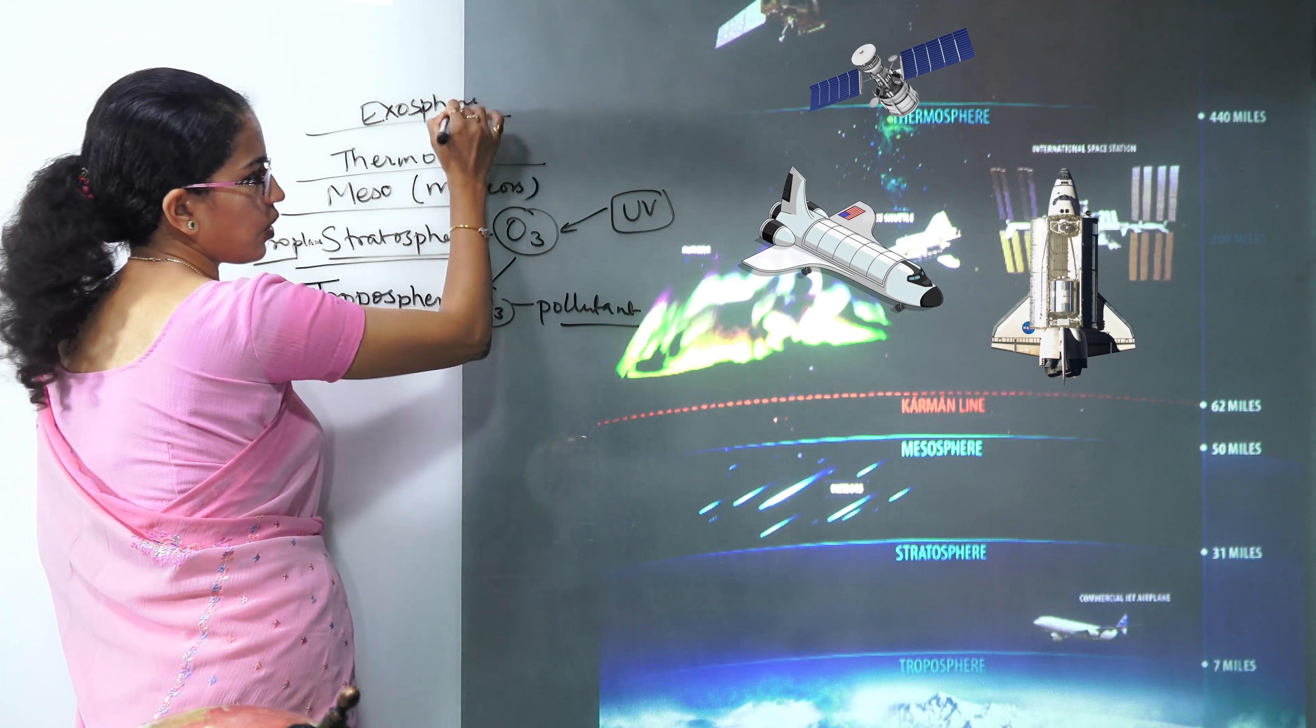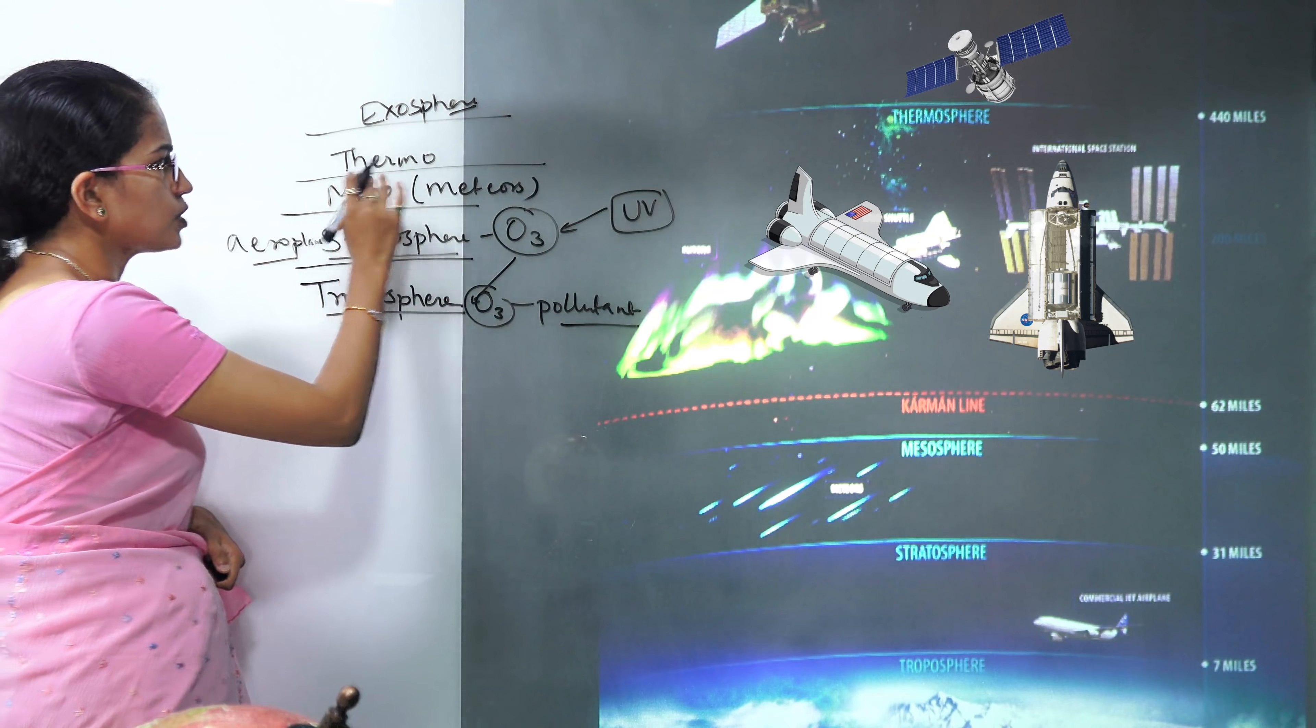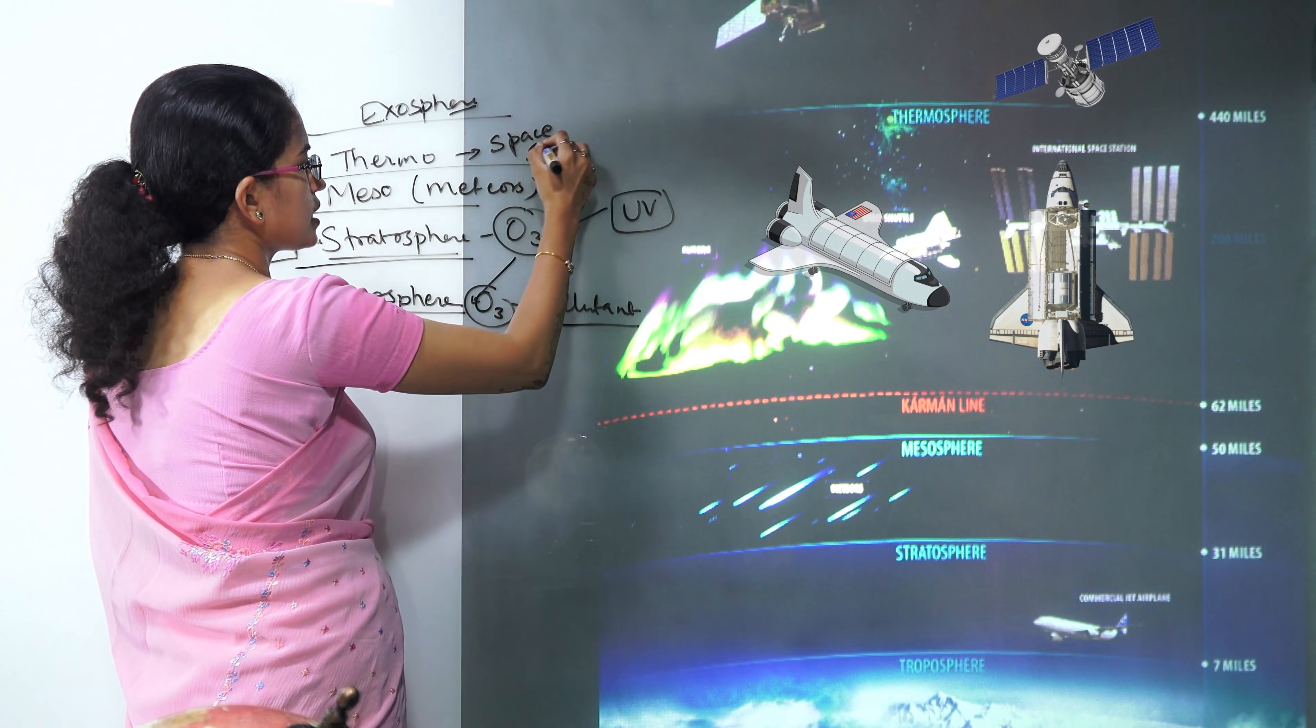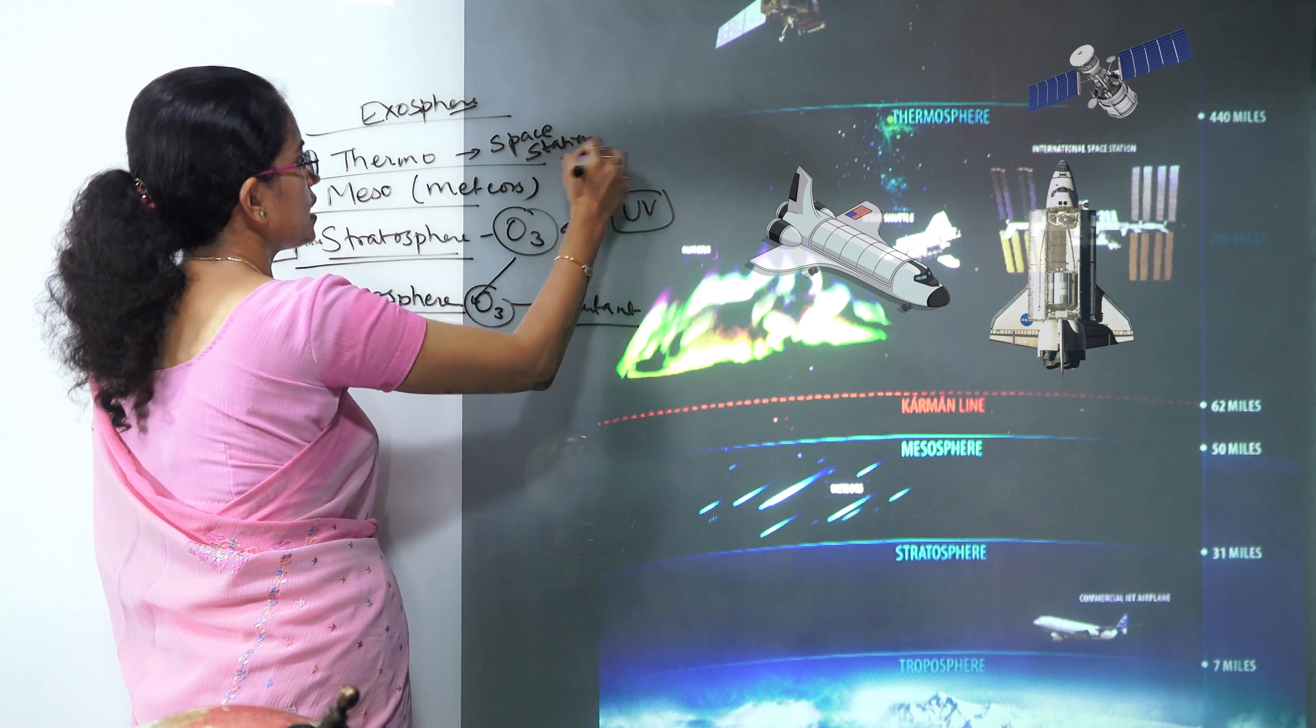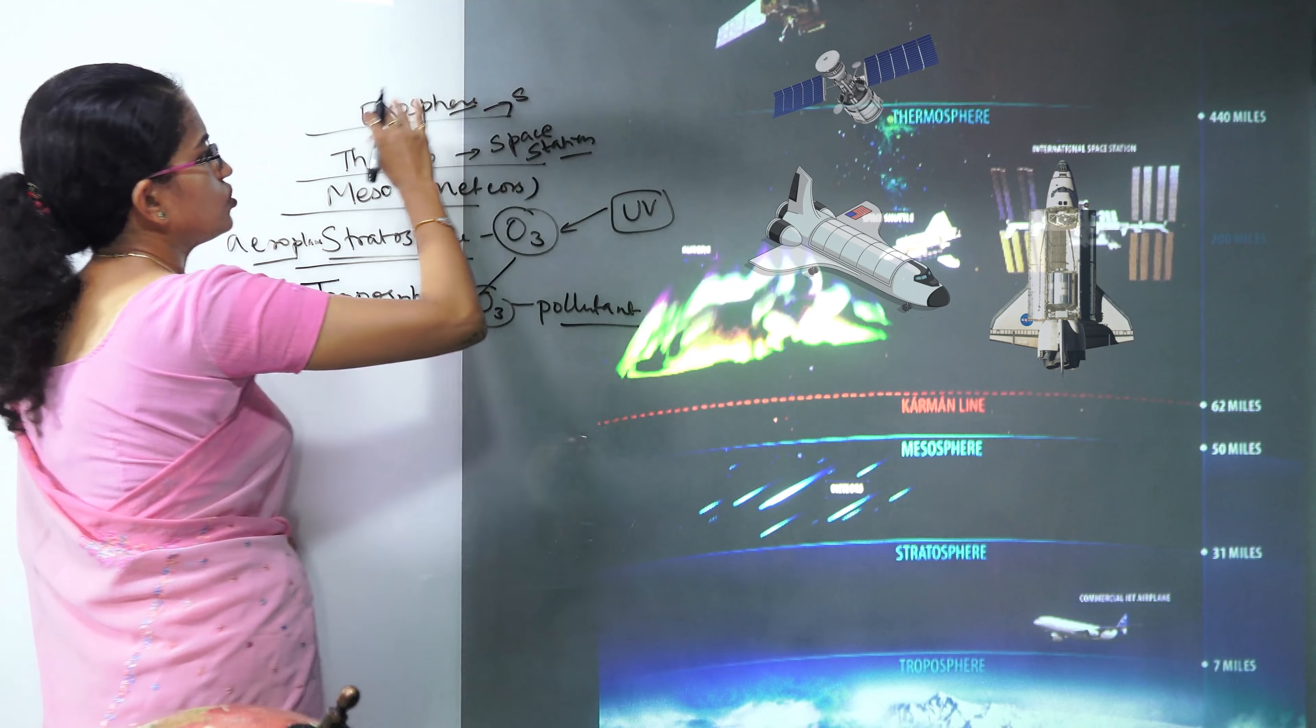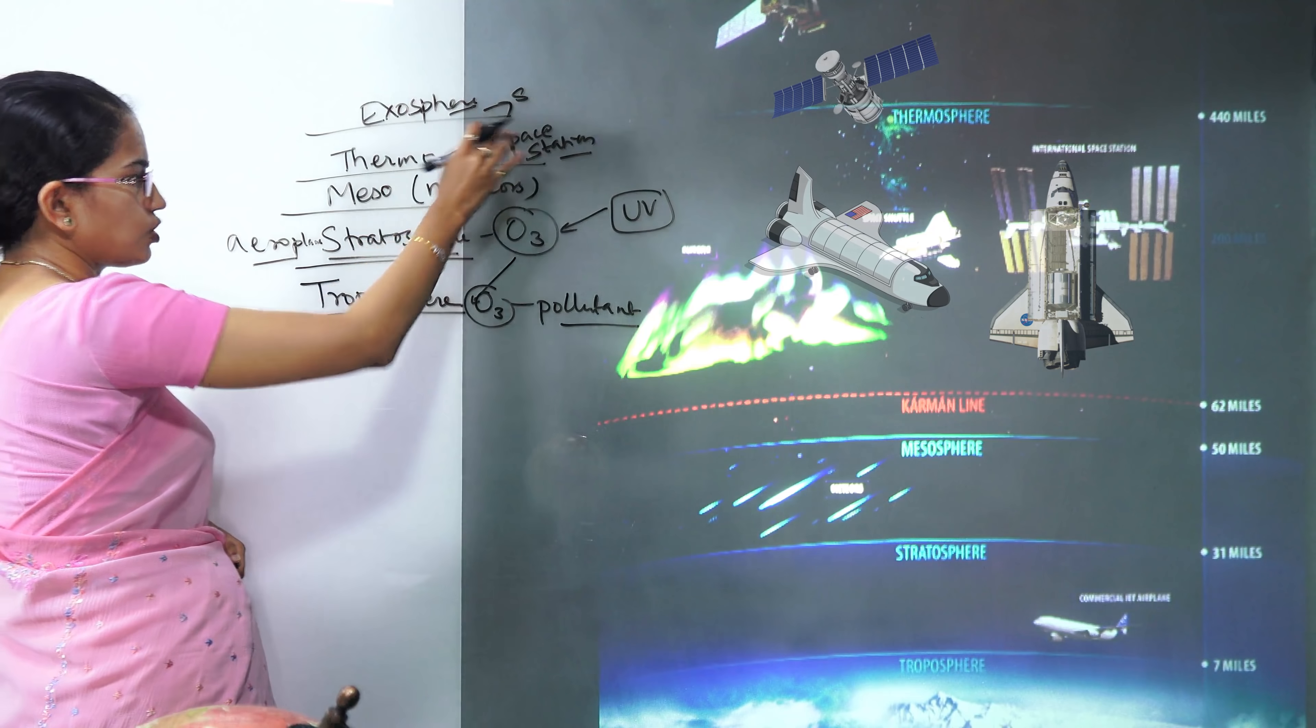So those are the common layers that we talk about. When we talk about thermosphere you have most of the space stations that are located in the thermosphere. And in the exosphere you have the space shuttles, you have the Hubble. So all those are located in the exosphere.